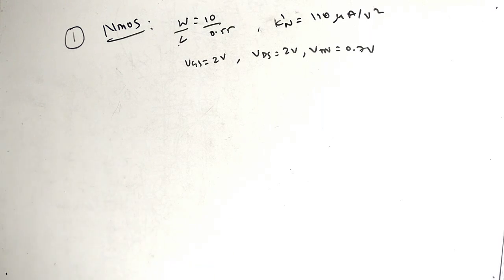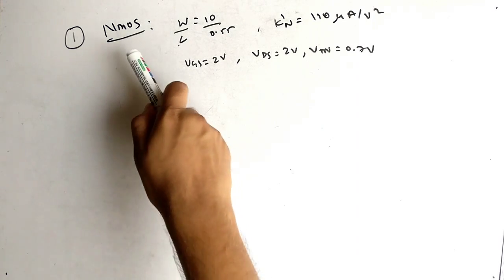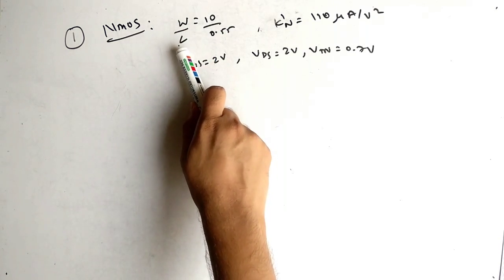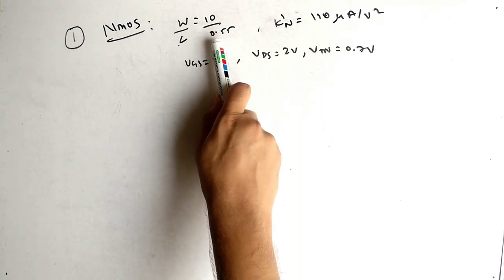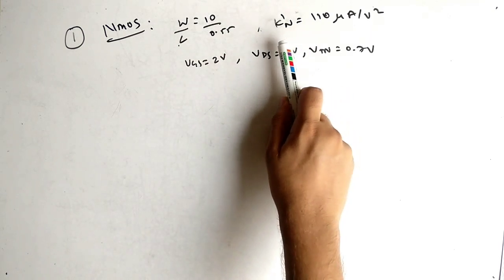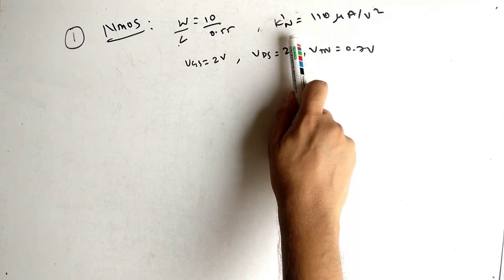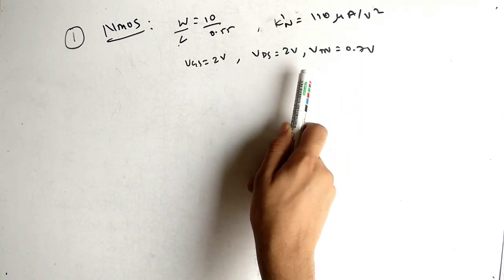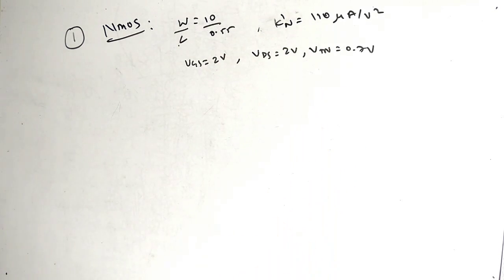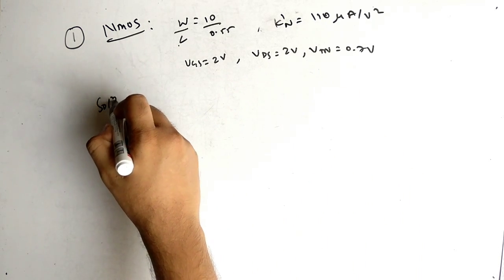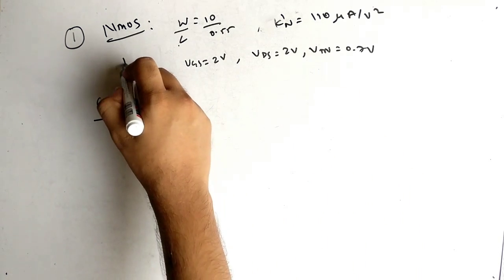Now let's solve example 1. We have an NMOS with W/L = 10/0.5, K'N is given, and VGS, VDS, VTN are given. We need to find ID.